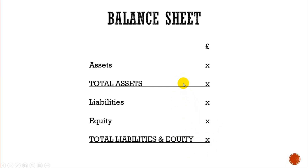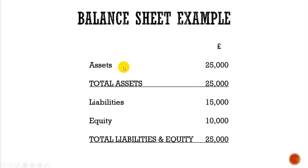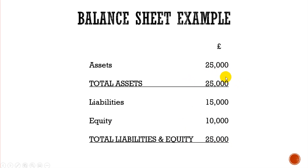Looking at an example, we have assets of 25,000. Total assets: 25,000. We then have liabilities and equity of 15,000 and 10,000, which also totals 25,000. So you can see our balance sheet balances — 25,000 on one side and 25,000 on the other. That's the basics of a balance sheet.